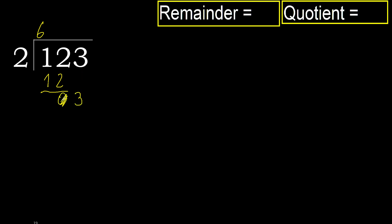Eliminate the 0 on this side. Bring down 3. 2 multiplied by 2 is 4 — 4 is greater. Multiply by 1 is 2, which is not greater. Subtract.